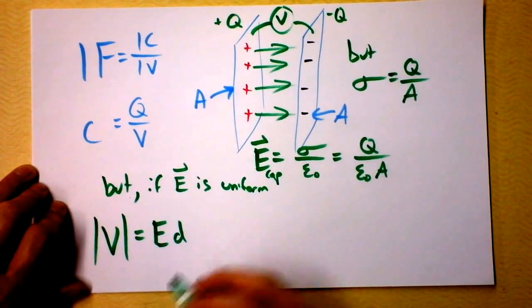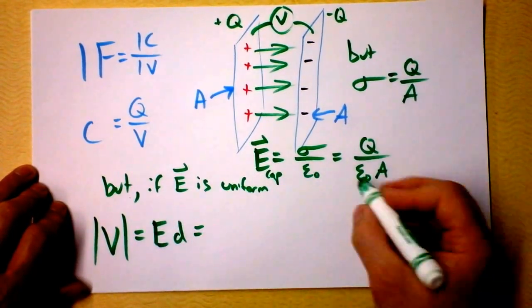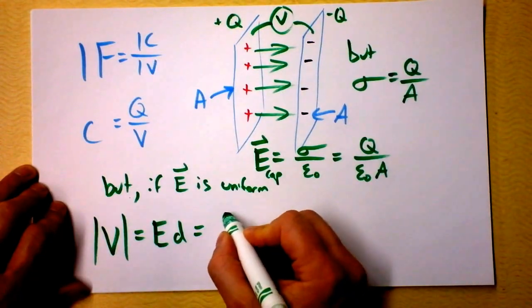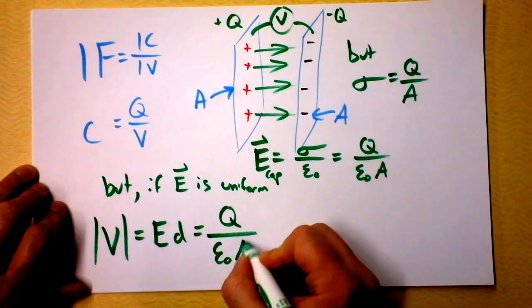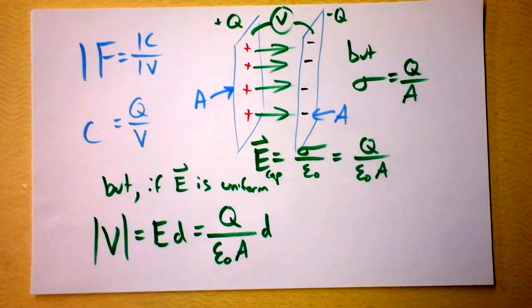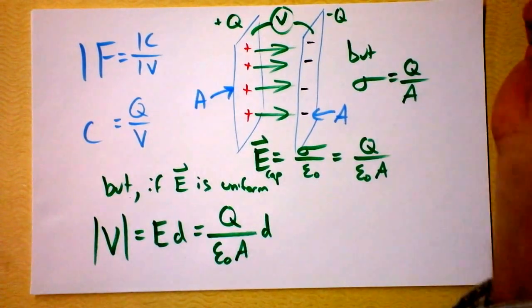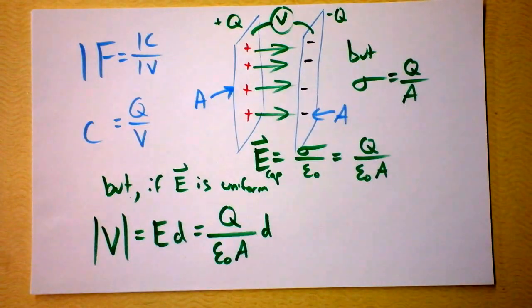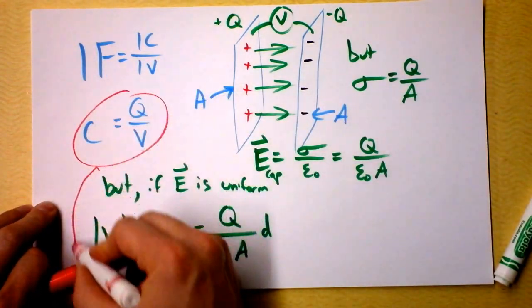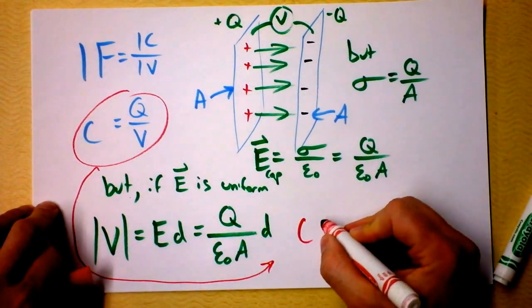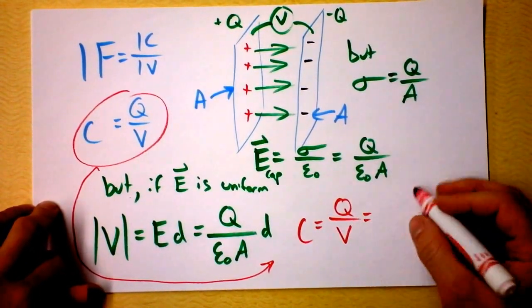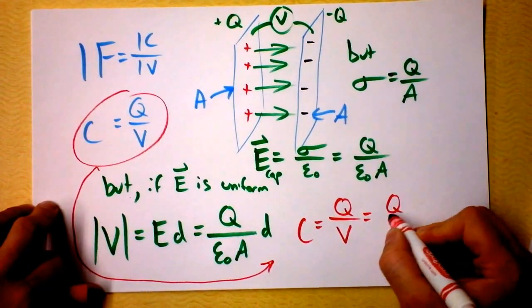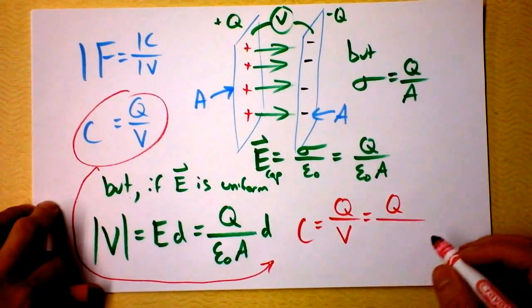Remember, it's Ed, right? And we can plug in that electric field, so we get Q divided by epsilon naught area, and then multiply the whole thing by D. Now, if we want capacitance, we have to go back to our previous equation right here, and we can drag it over there and say that the capacitance is the charge divided by the voltage, and then we're going to plug in this cool expression for voltage.